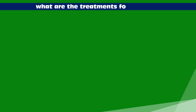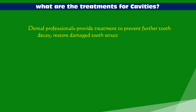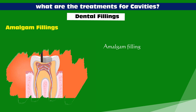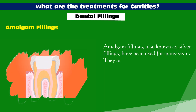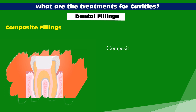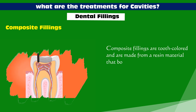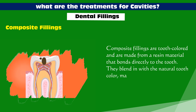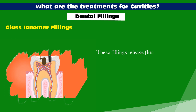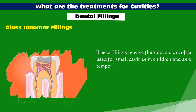What are the treatments for cavities? Dental professionals provide treatment to prevent further tooth decay, restore damaged tooth structure, and relieve associated pain or discomfort. Treatment options vary depending on the severity of the decay. Dental fillings include amalgam fillings — also known as silver fillings — which are made from a mixture of metals and are strong and durable. Composite fillings are tooth-colored, made from resin that bonds directly to the tooth, and are a popular choice for front teeth. Glass ionomer fillings release fluoride and are often used for small cavities in children or as temporary fillings for adults.